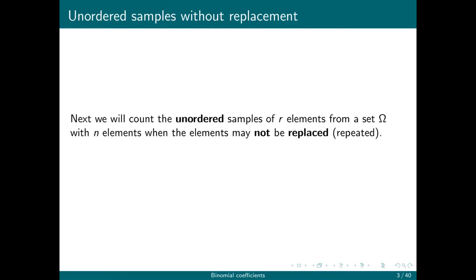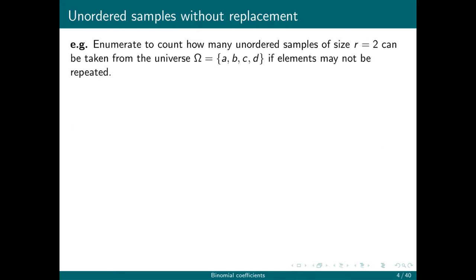Next we're going to count the number of unordered samples of r elements from a set omega with n elements when the elements may not be repeated. We're going to go in the opposite order this time—we're going to start without replacement. As usual we start with an example. We're going to enumerate to count how many unordered samples of size 2 can be taken from the universe omega equals {a, b, c, d} if the elements may not be repeated.